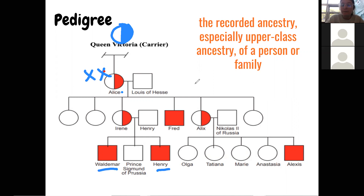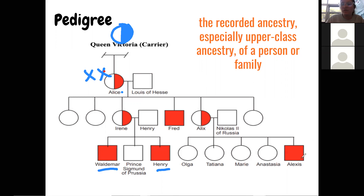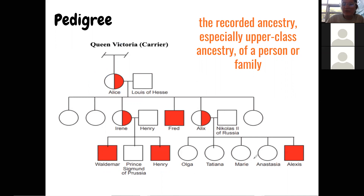Then Alice had Fred — they finally got a son — except the son has hemophilia because he got his mom's bad X chromosome with the wonky gene. Then Alex, who married Nicholas II of Russia, had four girls who are not carriers and finally a son, Alexis — and the son also has hemophilia. That is how the pedigree works.